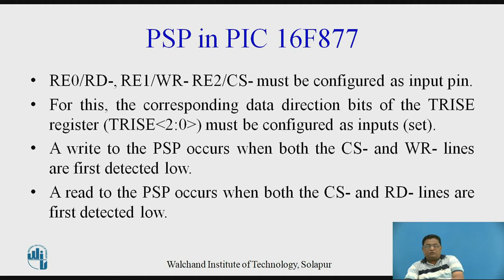A write to the PSP occurs when both CS bar and write bar lines are first detected low. When CS bar and read bar are both detected low, a read operation has occurred on the parallel slave port.